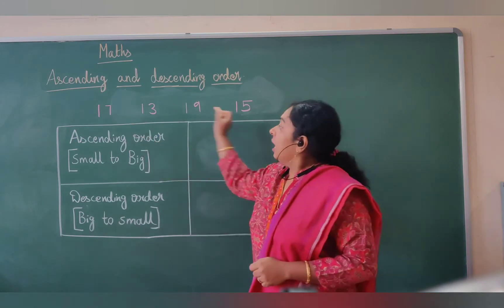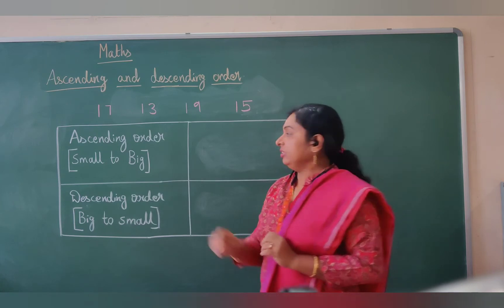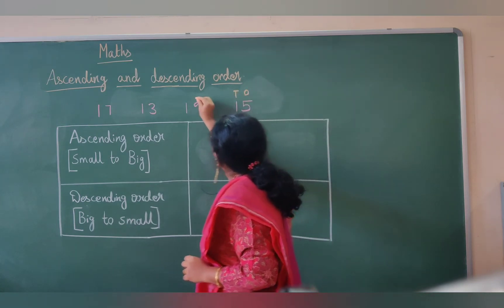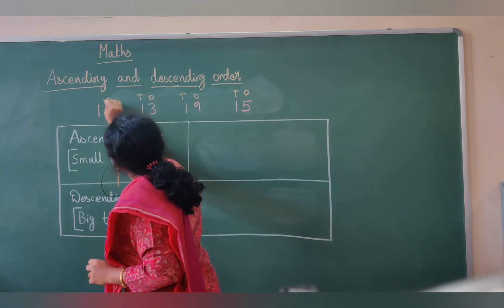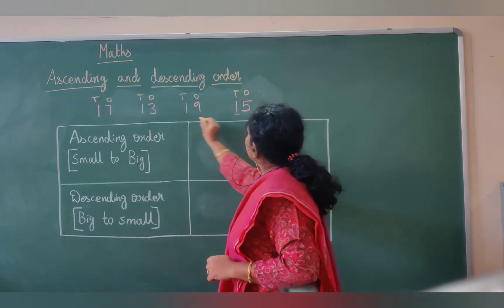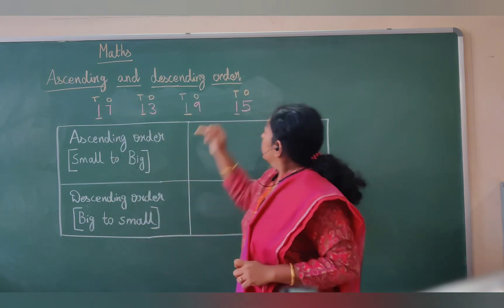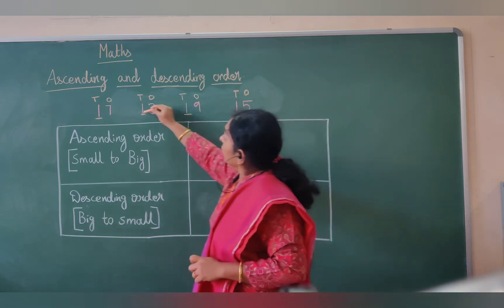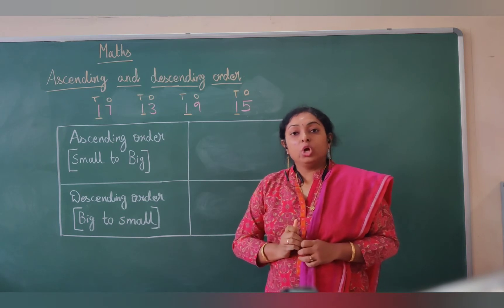Children, let us arrange these numbers in ascending and descending order. Have you noticed something? Let me write the ones and tens of these numbers. You can find that they have the same digit in the tens place — under the tens place value we have 1, 1, 1, 1. All these numbers have a common value in the tens place.